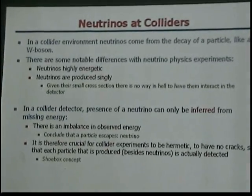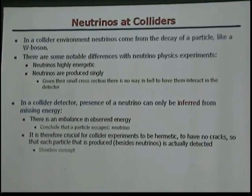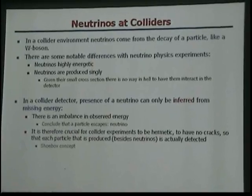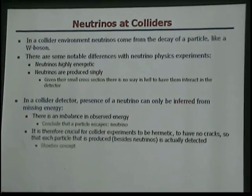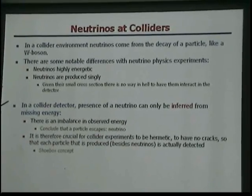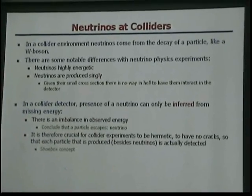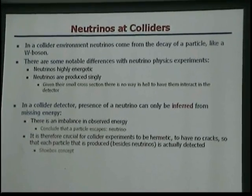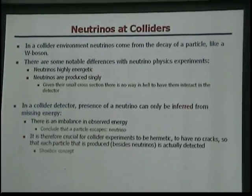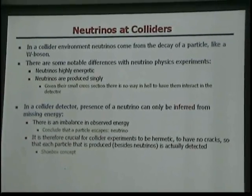Now, neutrinos. We also said that in the top quark decay, it decays into a W-boson, which decays into a lepton and a neutrino. I said that neutrinos interact very weakly. So if neutrinos interact weakly, there's no way we're going to detect this neutrino directly. So how do we do that? There are very big differences between neutrinos in a collider experiment and in a neutrino experiment. These neutrinos in a collider experiment are highly energetic, and we only have one of them — and that one we will never be able to detect, because they interact weakly.